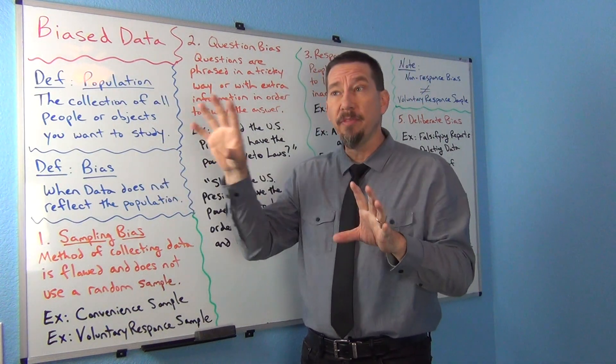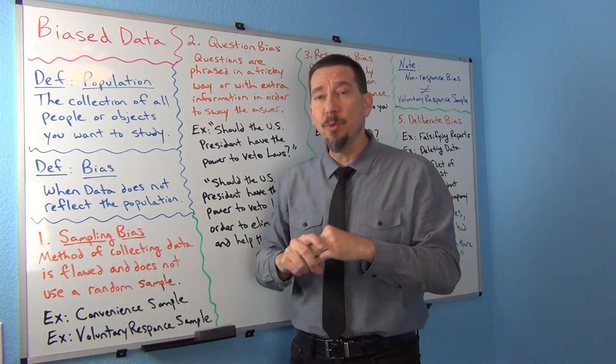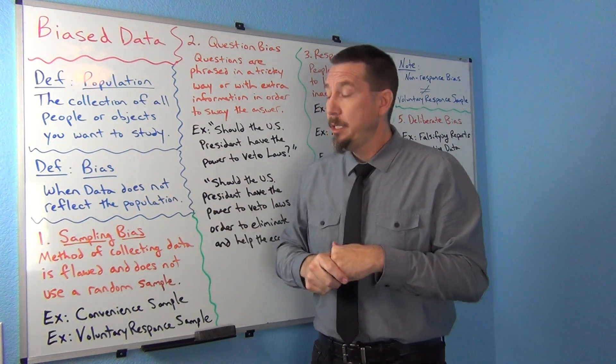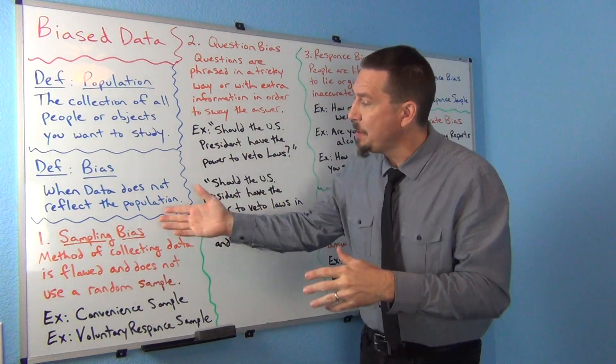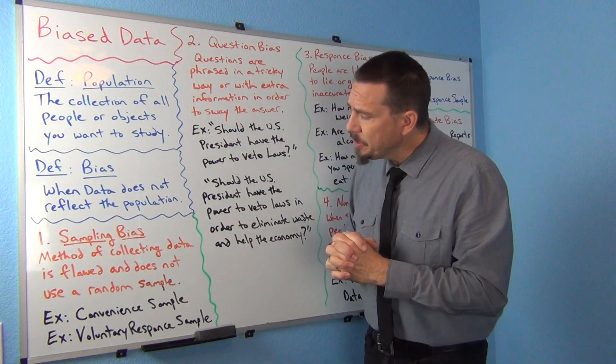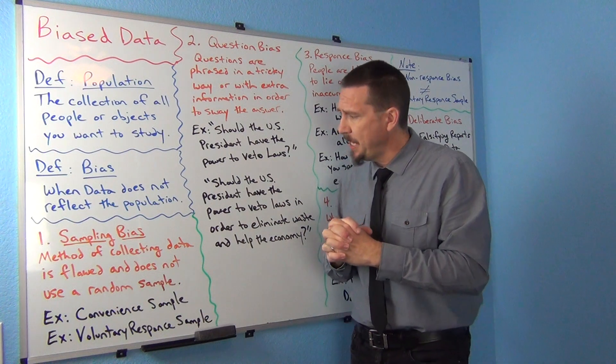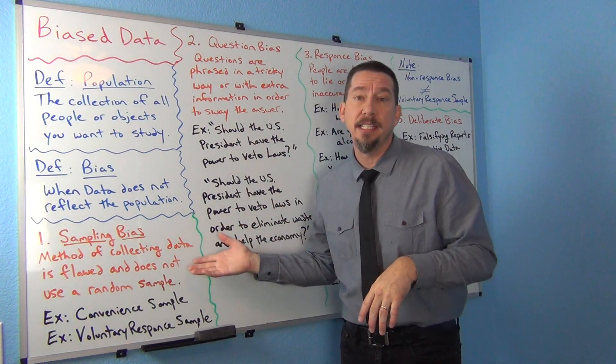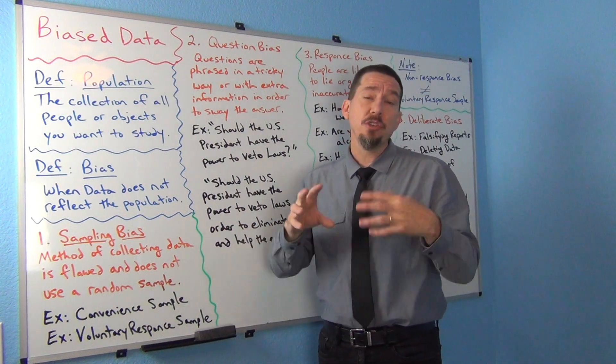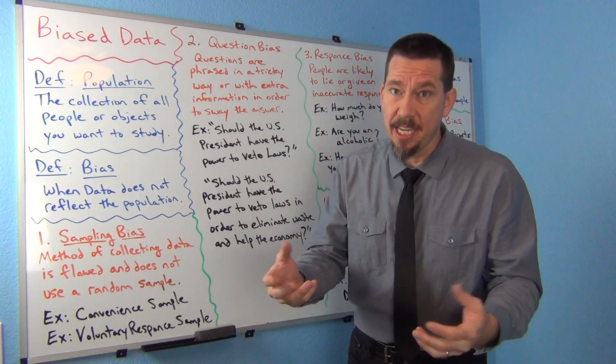When your data does not reflect the population, there's lots of ways that could happen. Let's start with all these different types of bias. Our first type of bias is often referred to as sampling bias. This means that the method of collecting the data is flawed. Usually it means you did not take a random sample.